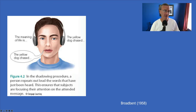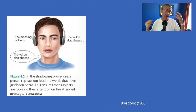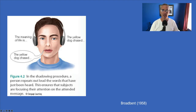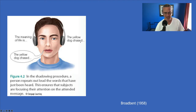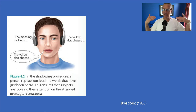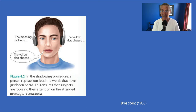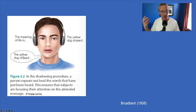Dichotic listening uses headphones to present different information to the left ear and the right ear simultaneously. For example, the right ear might hear 'the meaning of life is' while the left ear hears 'the yellow dog chased' — each ear gets independent sentences streaming to it. The participant is asked to shadow one of the messages: right after hearing a word, say the word, essentially repeating the message in one ear.